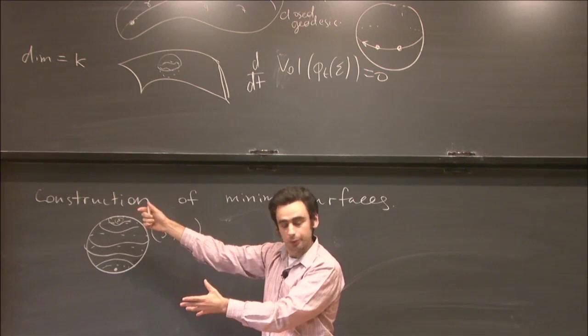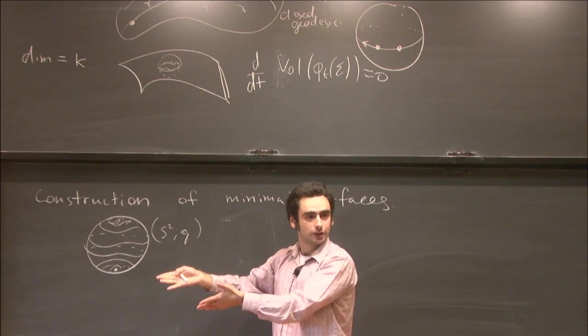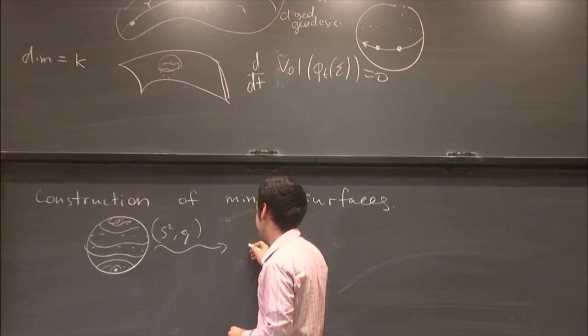The curves that are very close to this point will contract to that point as you run the process, and the curves that are very close to that point will contract to that point as you run the process. But there will be some curve in between which will not know whether to go up or down, and so it will get straighter and straighter and will converge to a geodesic.